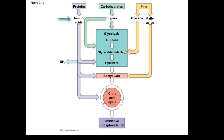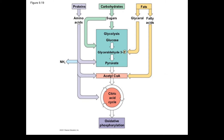Proteins are broken down into amino acids, and those can either enter the bridge or the Krebs cycle. Fats are broken down into glycerol and fatty acids. Glycerol feeds into glycolysis, and fatty acids feed into the bridge.